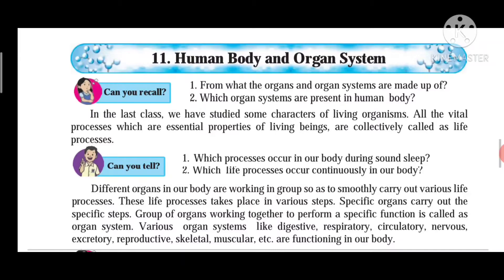Friends, this is the second video of this lesson on human body and organ system. In the first video we covered the human body, then some processes carried out in the human body, then organ systems, different systems, and we covered respiration. Respiration takes place by three steps: external respiration, internal respiration, and today we are looking at cellular respiration.